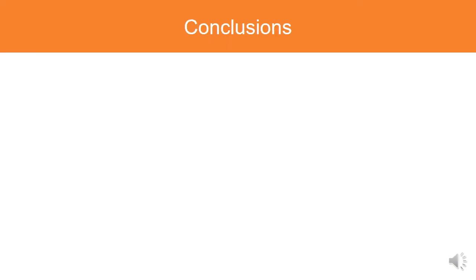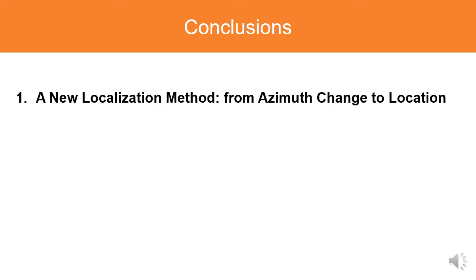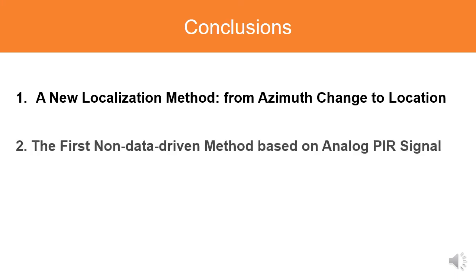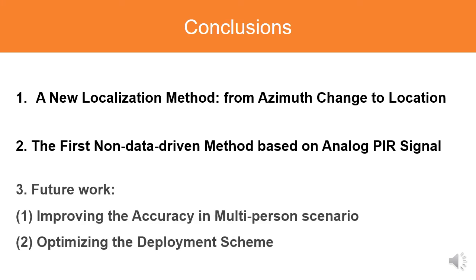In conclusion, our work has two main contributions. First, we propose a new localization method that utilizes the target's azimuth change to infer location. Second, the proposed method is the first non-data-driven PIR-based method that utilizes the analog signal of PIR sensors for localization. In the future, interesting directions include how to improve localization accuracy in multi-person scenarios and how to optimize the deployment schemes of PIR sensors. Thank you for your listening.